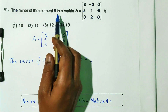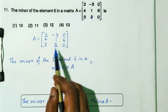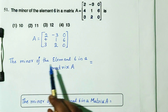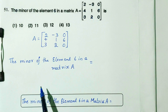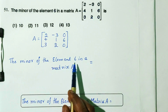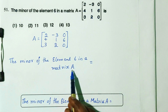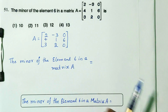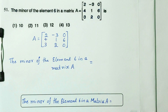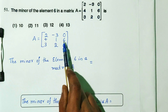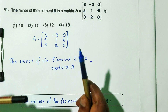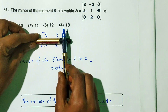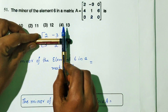We need to find the minor of the element 6. The element 6 is located in the matrix, and for the minor of element 6, we close its row and column.